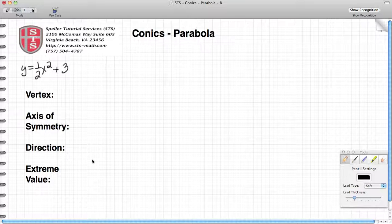We're going to look at the vertex, axis of symmetry, direction, and extreme value to help us actually graph and find out what this particular problem looks like. We're going to take this function that we have here, y equals one half x squared plus three.